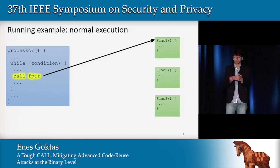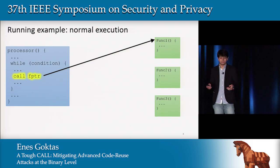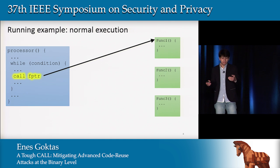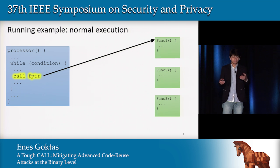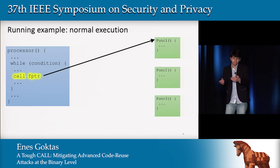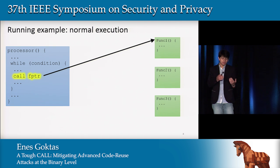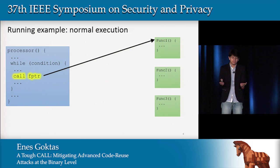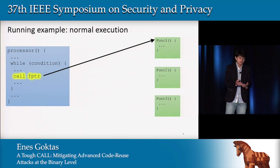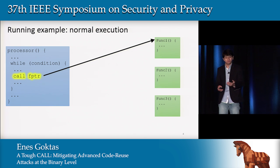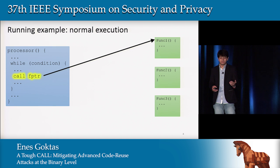It's not a direct call — it can be different functions at different moments in the program. Here we take three functions from the program as an example. This indirect call is allowed to call function one, but not function two and function three.